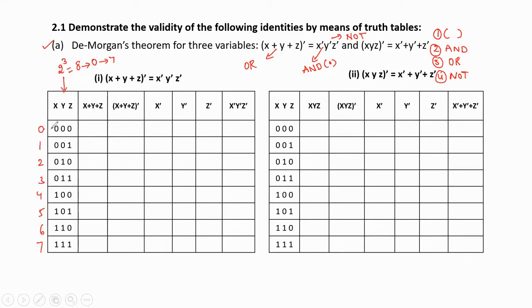The binary weights are 2⁰, 2¹, and 2², with equivalent values 1, 2, and 4. For 0 the binary is 000. For 1, place a 1 in the binary weight 1 position; remaining bits are 0. For 2, place 1 in the binary weight 2 position. For 3, place 1s in positions of weights 2 and 1 (2+1=3). For 4, place 1 in the binary weight 4 position. Similarly for 5, 6, and 7.